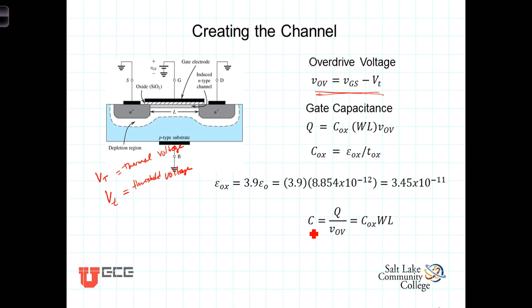Then we can calculate the actual capacitance for the gate, which is equal to the charge in that layer divided by the overdrive voltage, or simply COX times the width times the length.